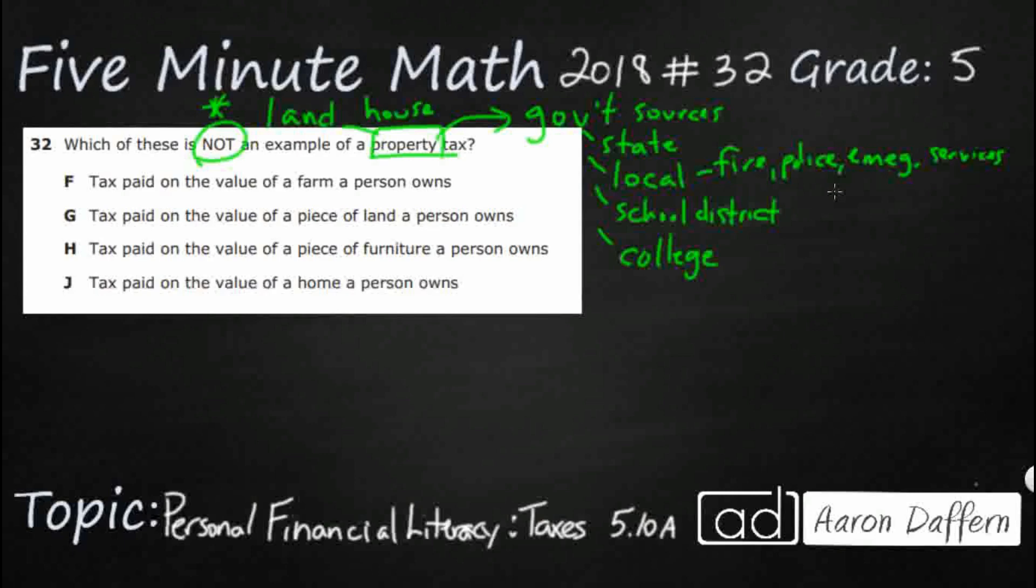And then any houses that are valued on the land. Now typically, if you are buying a house, those two get wrapped up together. You get just one tax, and it's the value of the land plus the value of the house sitting on the land, but sometimes they're separate. So that's what we're looking for - anything that is dealing with land or a house is going to deal with your property tax.